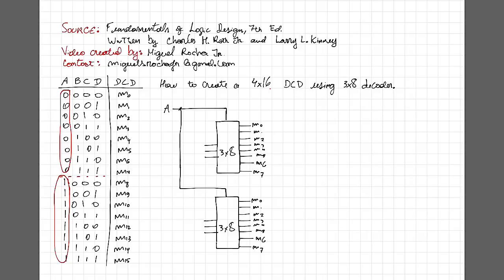We're going to do this because, on the definition of a decoder, we stated that only one output is going to be one, while all the other outputs are going to have a logic zero for a specific input combination. So let's take an example.